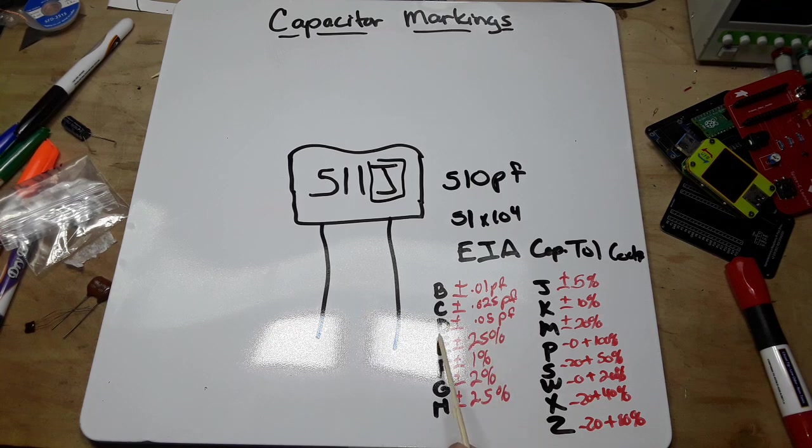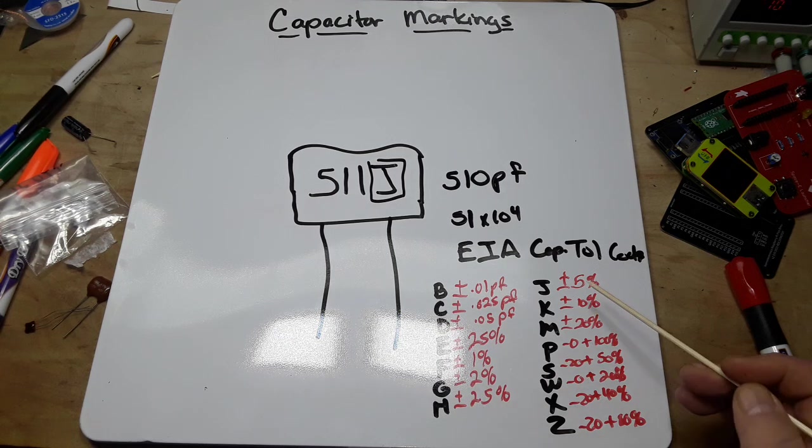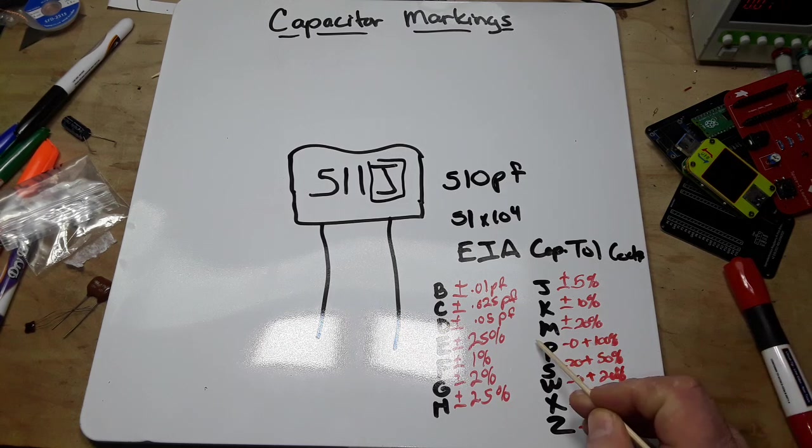And then we start moving to percents. E is 25% plus or minus, F is 1%, G is 2%, H is 2.5%, going all the way up to 20% here at M.